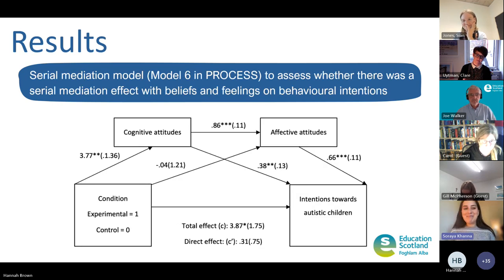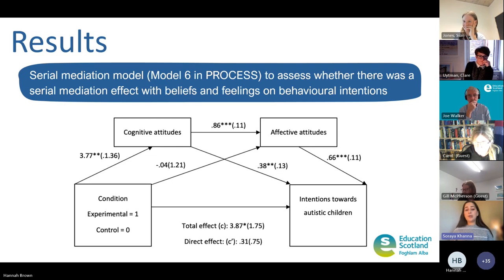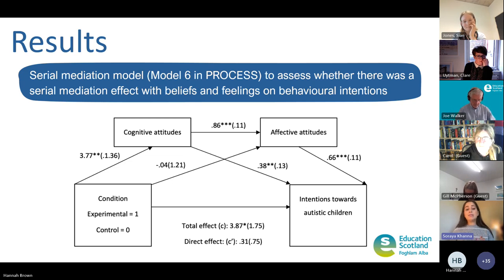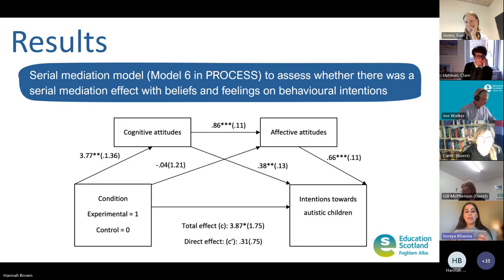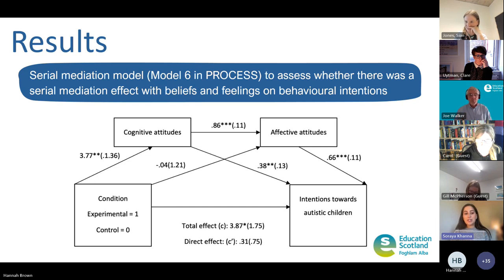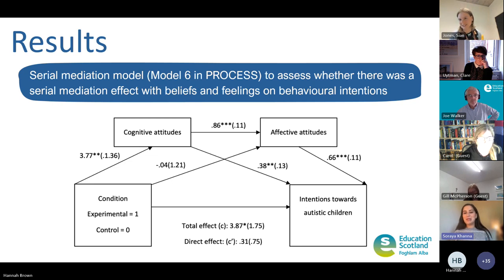I then did some mediations. It is important to say that I only inputted the post-intervention scores, so we need to treat these findings with a bit of caution. T-tests did reveal a significant difference from pre to post-intervention for all mediators in the experimental group. The findings suggested a significant serial process where being in the experimental group leads to more positive beliefs — cognitive attitudes — which then leads to positive feelings, which in turn improves intentions towards autistic children. This wasn't significant when feelings and beliefs were the other way round.